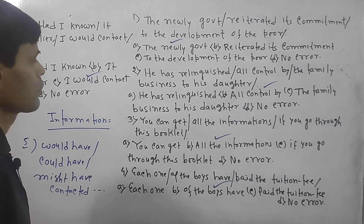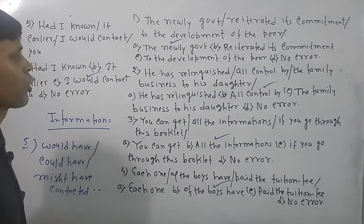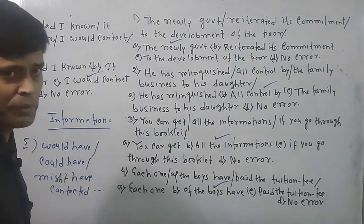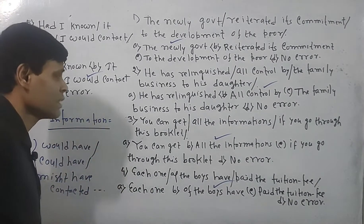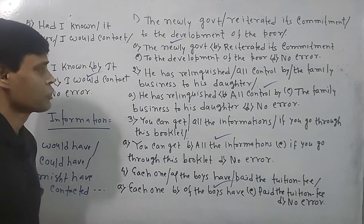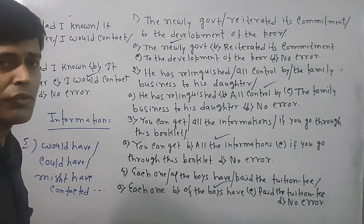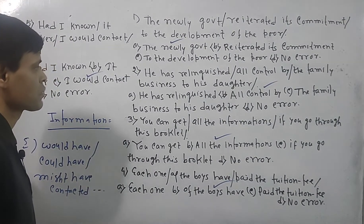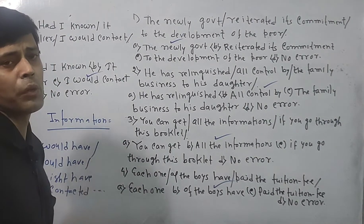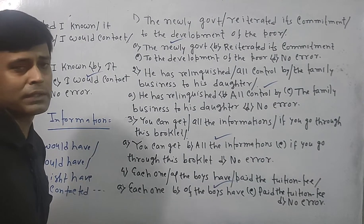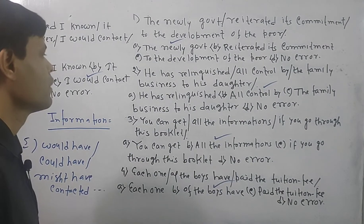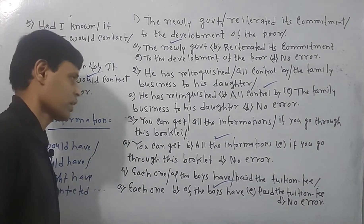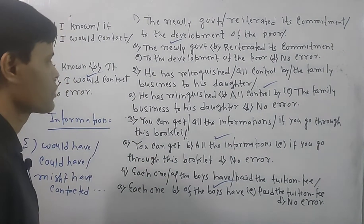Let me give a short recap. Question one: 'The newly government reiterated its commitment to the development of the poor.' Before a noun we generally place an adjective, but here an adverb was placed — so the mistake lies there. It should be 'new government' or 'newly formed government.' Question two: 'He has relinquished all control by the family business to his daughter.' After the word 'control,' we generally place the preposition 'over,' so 'by' is the mistake — there is no mistake in the rest of the sentence.